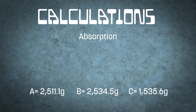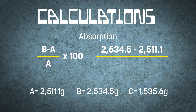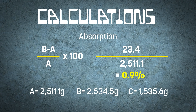We can now calculate our absorption. The calculation for absorption is (B minus A) divided by A, times 100, or (2,534.5 minus 2,511.1) divided by 2,511.1, times 100. This gives us 23.4 divided by 2,511.1, which comes out to 0.009, multiplied by 100 gives us an absorption of 0.9%.